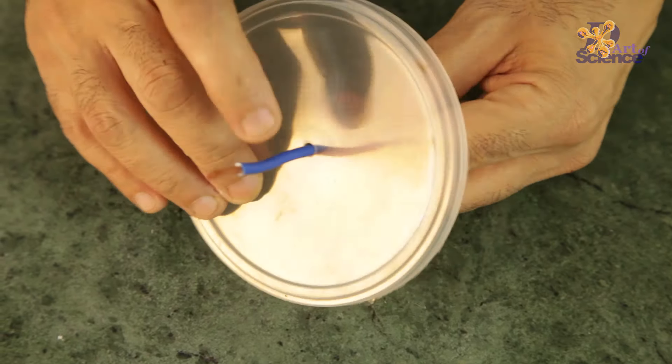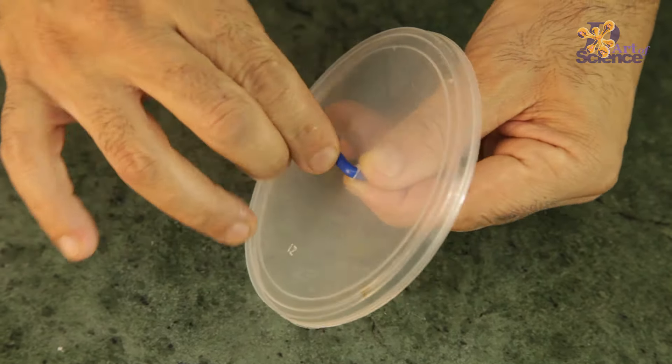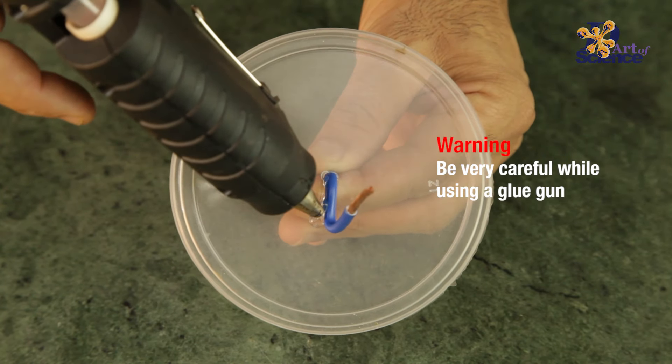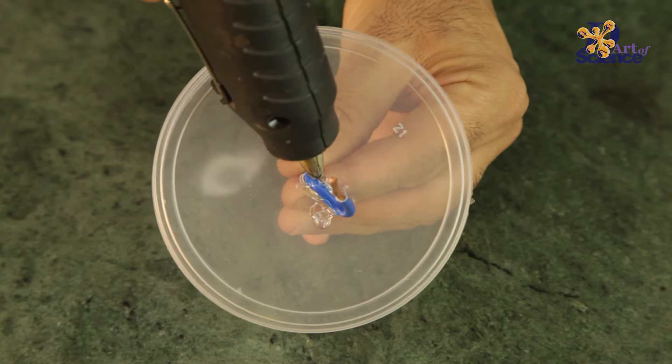Put the wire through it and bend it as shown. This bend is so that you get more surface to glue. Glue it well so that there's no air gap in the hole and the wire is fixed strongly on the cap.